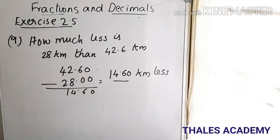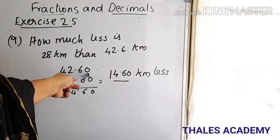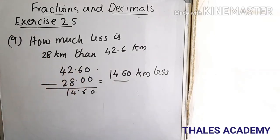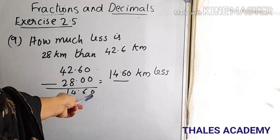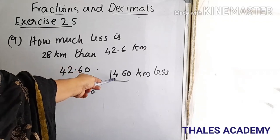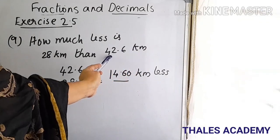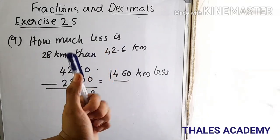How much less is 28 km than 46.6 km? For that we subtract 28 from 42.60 km and get 14.60. So 28 km is 14.60 km less than 42.6 km.